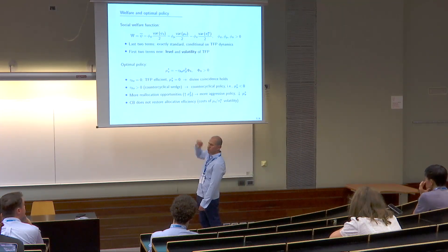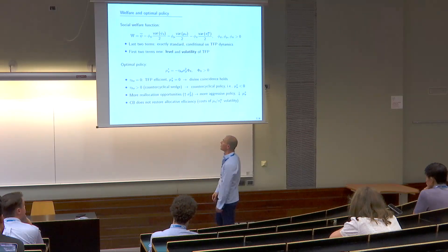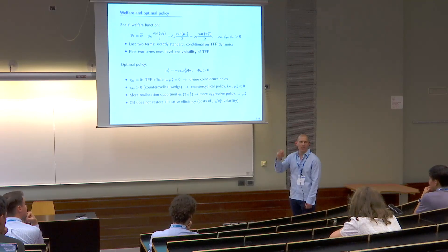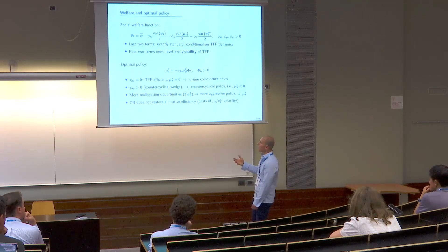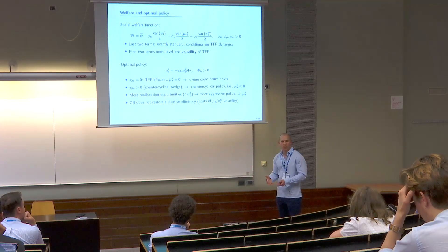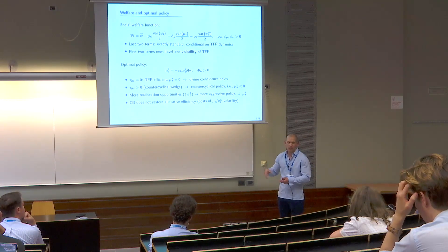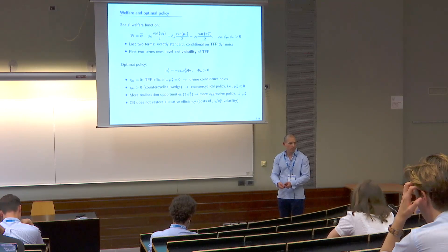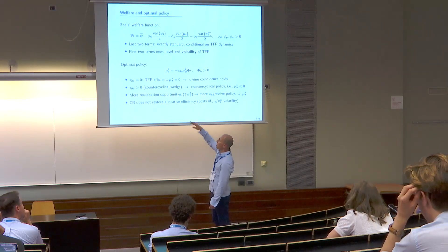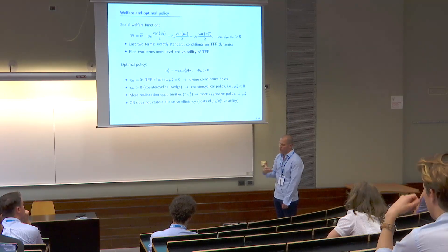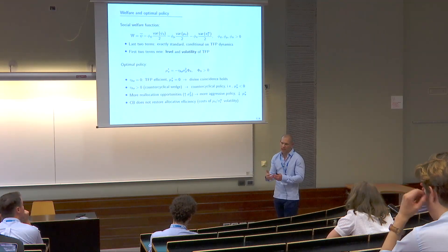Now consider the empirically relevant case: the wedge is counter-cyclical, so tau lambda A is positive. Optimal policy sets a negative mu A — it's willing to depart from complete stabilization to correct inefficiencies in the allocation. The intuition: the wedge makes agents act inefficiently risk-averse and not take on enough risk, making the allocation too conservative. So the central bank reduces aggregate risk, incentivizing the private sector to take on more risk and fix the allocation. The presence of sigma-squared beta says: with more reallocation opportunities, you're more willing to correct inefficiencies and depart from price stability.